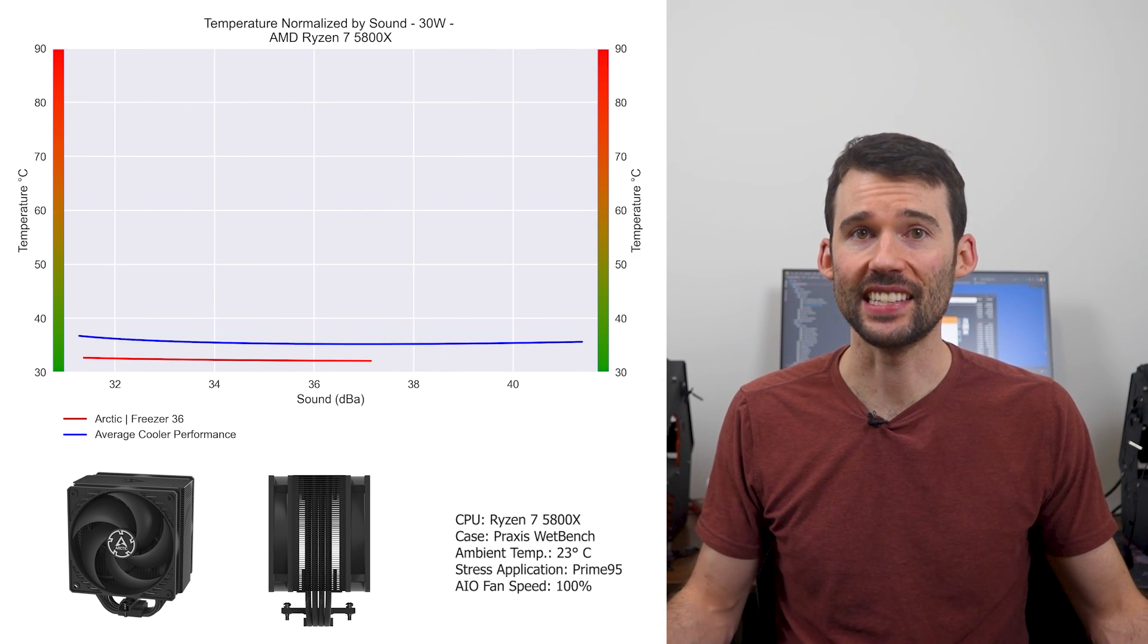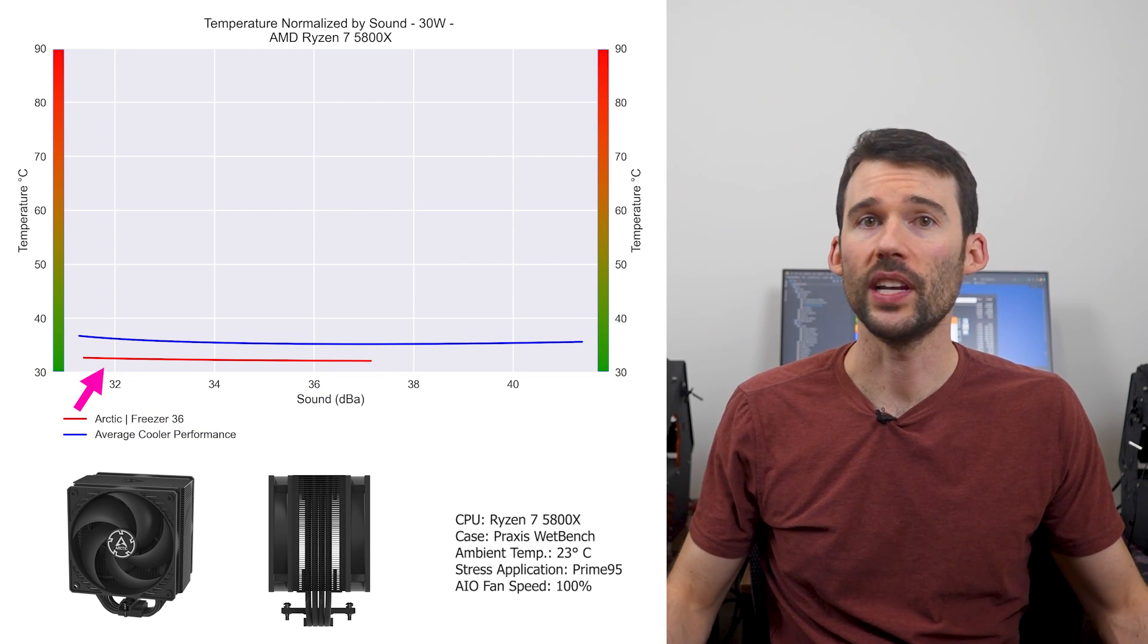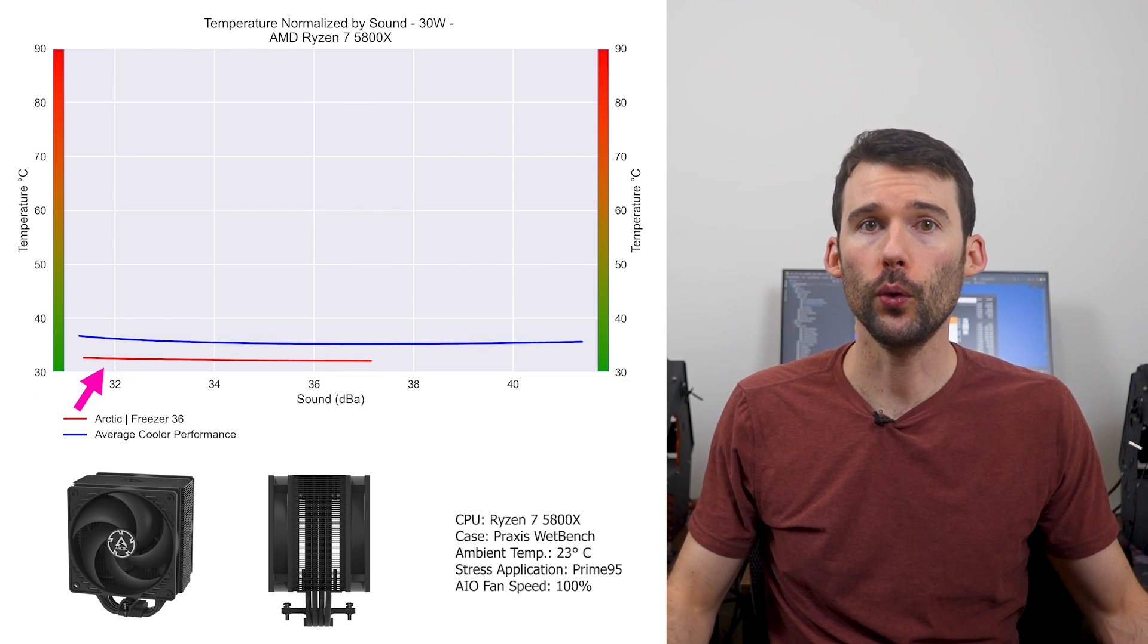In our second set of charts normalized by sound against the average cooler, we have temperatures on the left, noise on the bottom, with lower being better. At idle, we can see that the Freezer 36 provides more cooling for a given noise level.